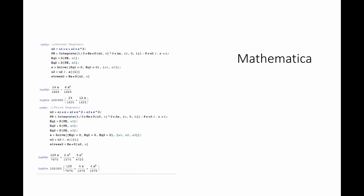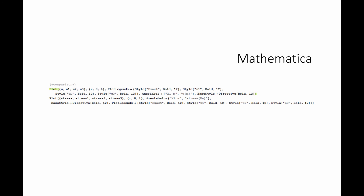Similarly, for the third degree, define u3 with three constants a1, a2, and a3. Write the potential energy, set three equations by taking derivatives with respect to a1, a2, and a3 and equating to zero, then solve the three equations. Store the solution, substitute a1, a2, and a3 into u3, and find the associated stress. Finally, use the Plot command to compare the four displacements — exact u, u1, u2, and u3 (linear, quadratic, and cubic polynomials) — and similarly plot the stresses.